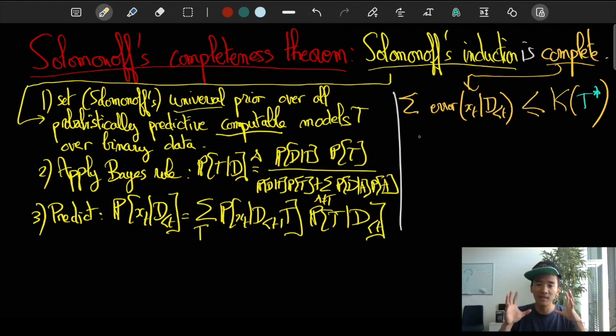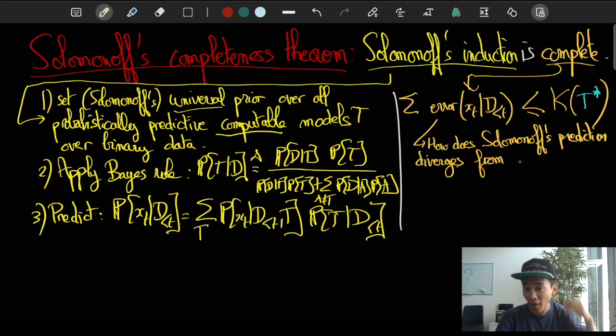First, we're going to assume that there's some truth out there, that there's some t-star theory, that is the theory that we want to make the same predictions as. And so then the question we may ask is, how far are we from the actual theory using our framework?